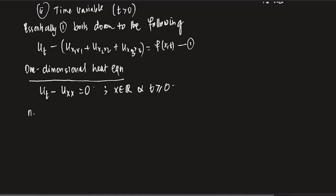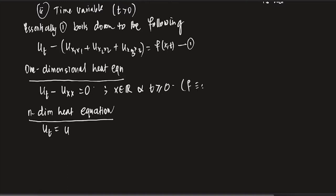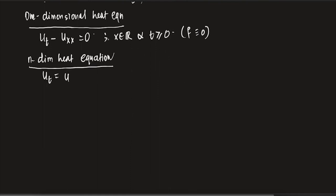The n-dimensional heat equation means x is in R^n. Here I am assuming the homogeneous problem with f equals 0 — if f is not zero, you just add it. The n-dimensional heat equation looks like: u_t = u_{x1x1} + u_{x2x2} + ... + u_{xnxn}.